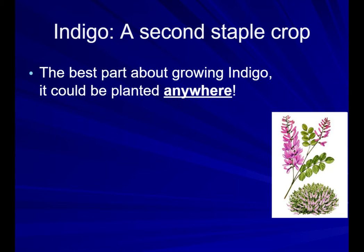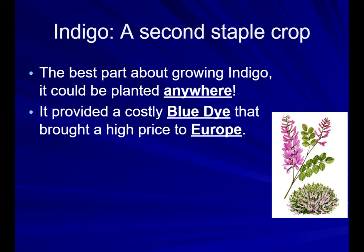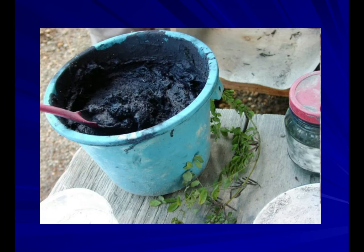Indigo is a second staple crop for Carolina. A really important fact about indigo is that it can be grown anywhere — it does not need unique soil to be grown, which is great for the back country. It provided a costly blue dye that bought a high price in Europe. Eliza Pinckney learned how to grow and effectively extract the blue dye and helped establish indigo as another cash crop for Carolina.